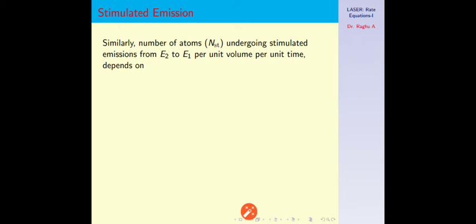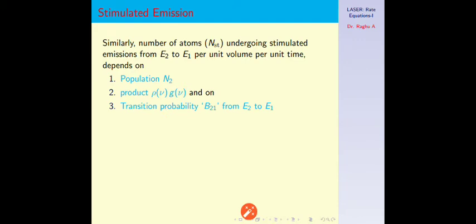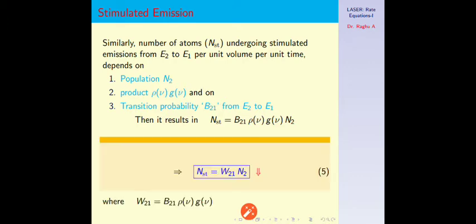For stimulated emission, similarly, we find the number of atoms undergoing stimulated emission from E2 to E1 per unit volume per unit time. It depends on the population in the excited level N2, the radiation density ρ(ν)·g(ν), and transition probability B21 from E2 to E1. Combining all three: N_st = B21·ρ(ν)·g(ν)·N2 = W21·N2, where W21 = B21·ρ(ν)·g(ν). This transition is a downward transition, shown as a down arrow.